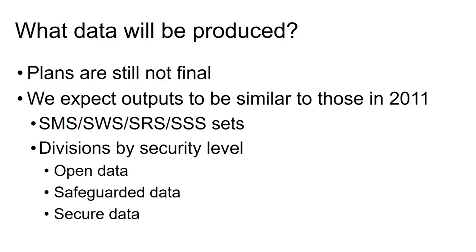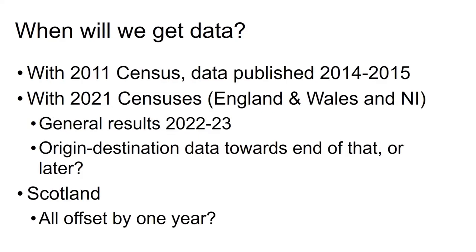The census agencies have spoken about potentially moving some of the safeguarded data from 2011 into either open or secure, but we don't know the extent to which that will happen. In 2011, the origin-destination data were published in the period 2014 to 2015 — they're a highly specialized set that takes quite a long time to assemble. The general results should be published one to two years after the census; we think the origin-destination data will be towards the end of that, or possibly a little after, but still considerably earlier than last time. For Scotland, we expect all of those to be offset by a year.